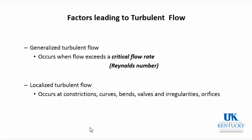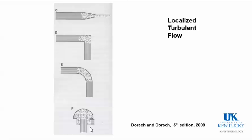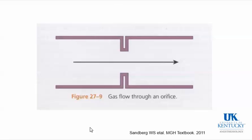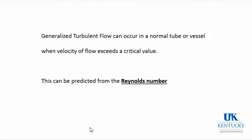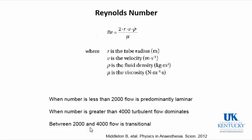Turbulent flow can be generalized or localized. Localized turbulence occurs at points of sudden change in diameter, angles, irregular surfaces, and orifices — these should be avoided whenever possible in breathing circuits. Turbulent flow in pipes also occurs when velocity exceeds a critical value, predicted by the Reynolds number. When the Reynolds number is below 2,000, flow is usually laminar; above 4,000, it is usually turbulent.